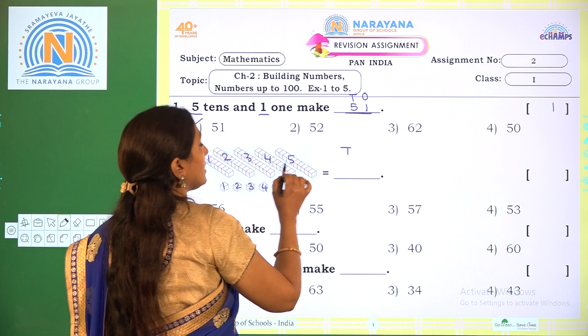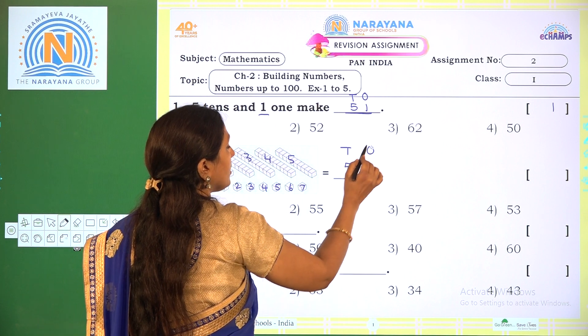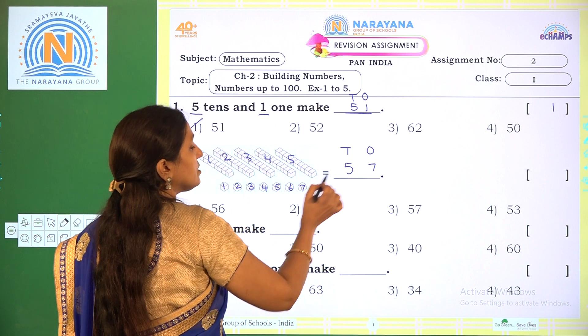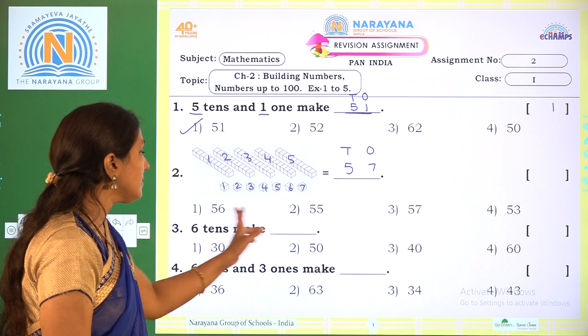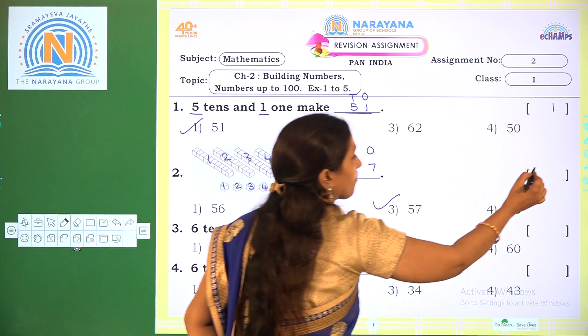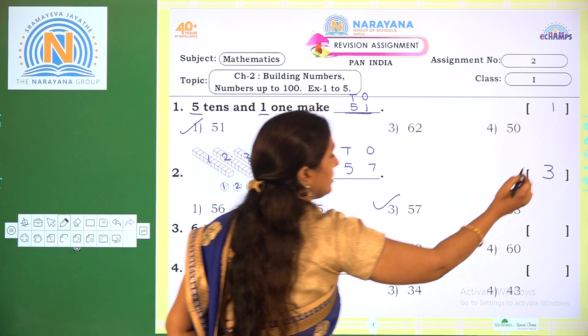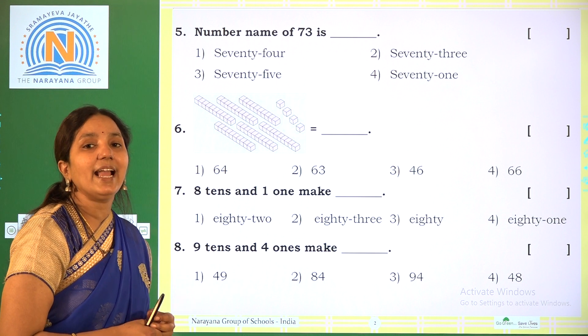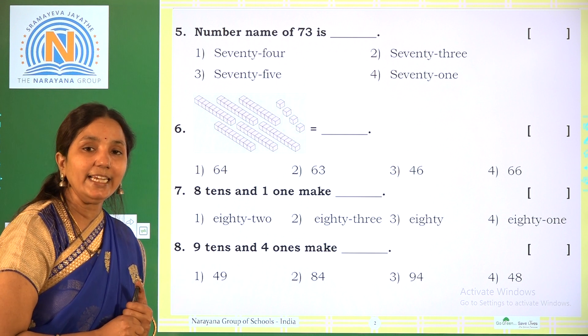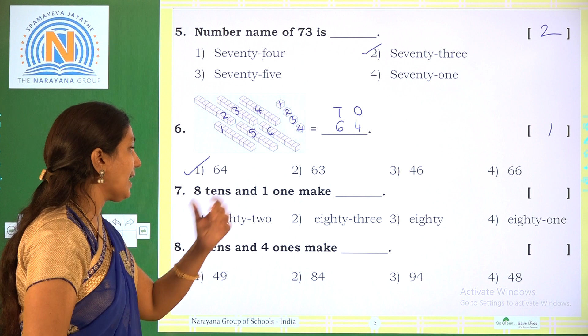Coming to the first one: 5 tens and 1 one make. So here, how many tens are there? 5 tens. How many ones are there? 1 one. So tens and ones: 1 and 5. Which number will you get? That is 51. So which is the correct option? Option 1.